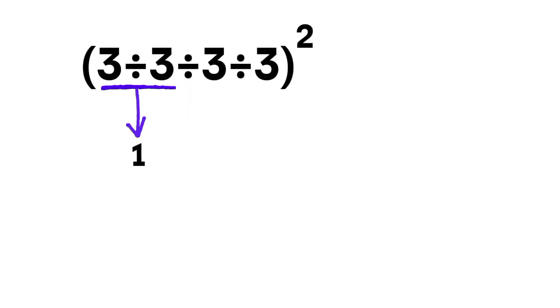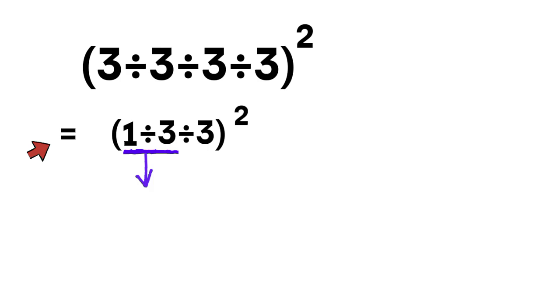3 divided by 3 equals 1. Now the question becomes 1 divided by 3 divided by 3, whole thing squared. Next, we take 1 divided by 3. That gives 1 third.